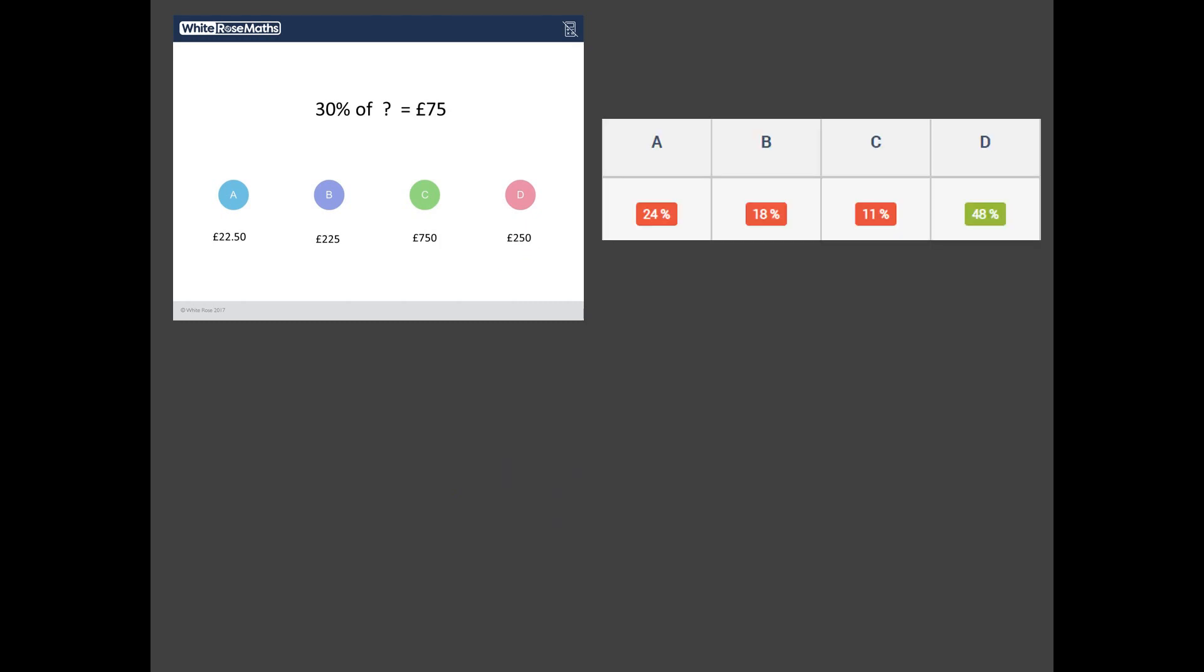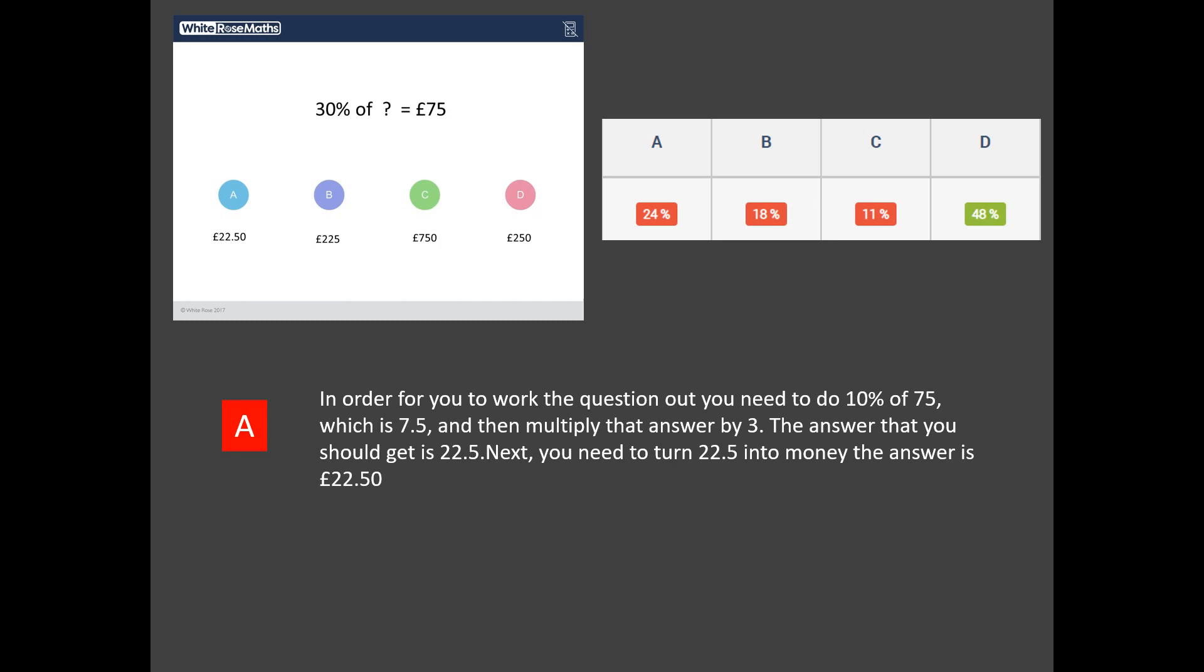Now look at this. Only 48% of students got that right. And again, the most popular wrong answer is A. Can you see where A comes from? £22.50. Maybe you got A yourself. Don't worry if you did. It's a very popular answer. And if you read why students got A, you can see. What have they done there? They've tried to work out what 30% of £75 is. But that's not what the question's asking. 30% of something equals £75. So watch out for that one.